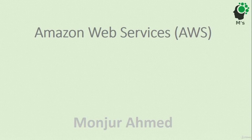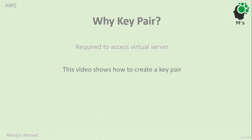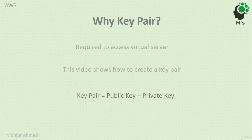In this video we'll see how to create a key pair on Amazon Web Services. We need a key pair to access virtual servers. When we say key pair, we mean two keys: one is the public key and the other is the private key. The public key is the key that everyone can know.